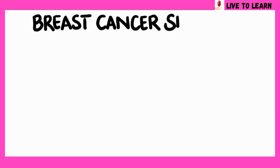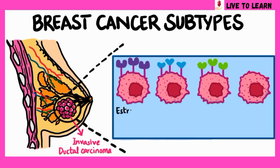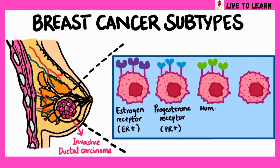Healthcare providers classify breast cancer subtypes by receptor cell status. Receptors are protein molecules in or on cell surfaces that can attract or attach to certain substances in your blood, including hormones like estrogen and progesterone, which help the cancerous cells to grow. Finding out if cancerous cells have estrogen or progesterone receptors helps healthcare providers plan treatment. Subtypes with estrogen receptors are labeled ER-positive, those with progesterone receptors are labeled PR-positive, and those with human epidermal growth factor receptor 2 protein (HER2) are labeled HER2-positive.